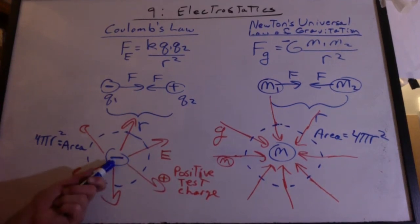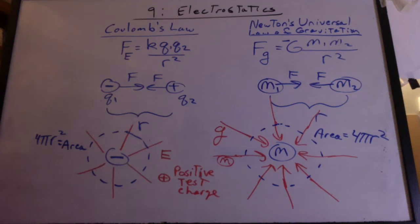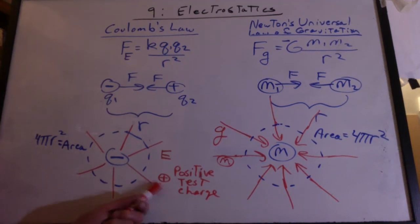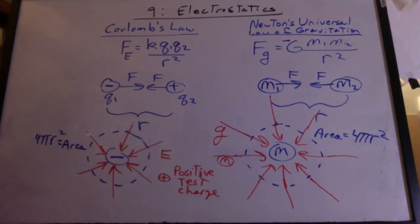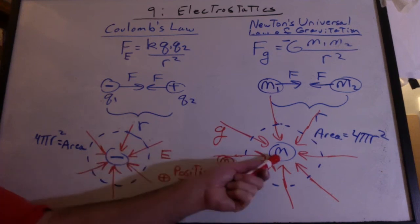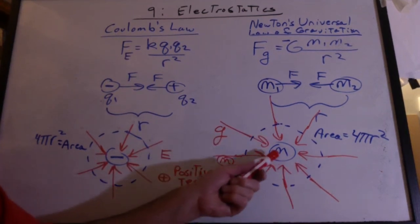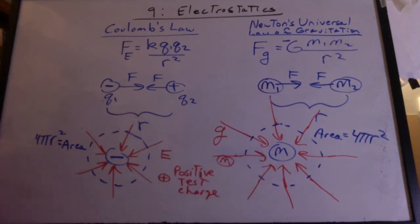What would happen if that charge was negative? Ask yourself what a positive test charge would do near a negative charge — it'll get pulled in. So that's the direction of the electric field for a negative charge. That's also what happens with the Earth: the field lines are going towards the center. We don't have the option in gravity for field lines going away.